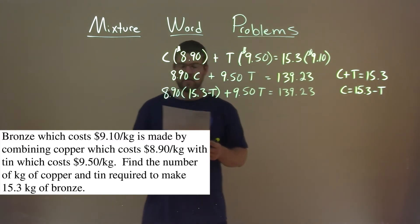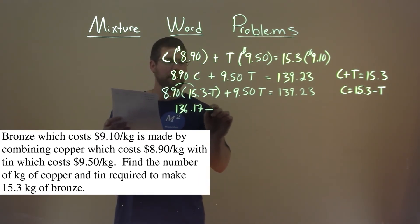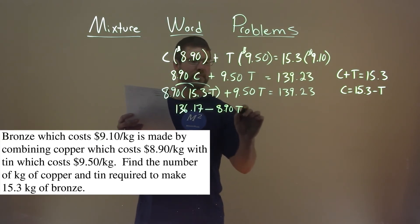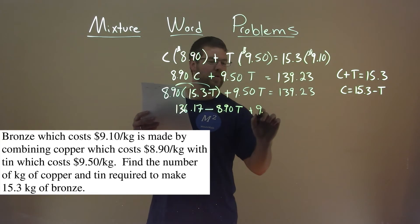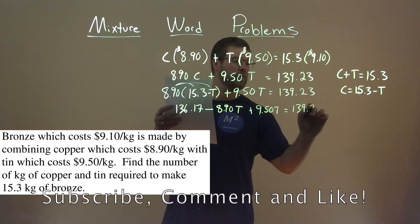And now we're solving. So let's multiply this out. 8.90 times 15.3 comes out to be 136.17, minus, don't forget to distribute to the T, minus 8.90 T plus here that 9.50 T equals 139.23.